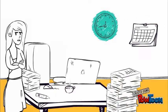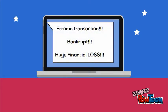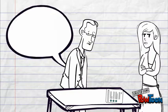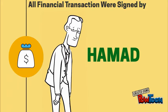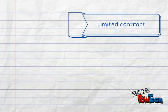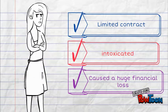Hamed started signing papers carelessly without even reading the content. After a while, his manager Aisha received multiple emails reporting a huge unknown amount of 5 million and many transactions which caused the company to be in a bad financial situation, risking bankruptcy. Aisha terminated Hamed. All financial transactions had been signed by Hamed. After all those events, Hamed is terminated immediately without any notice, as he came to work intoxicated and caused a huge financial loss, so he is terminated automatically.